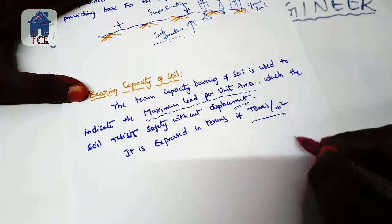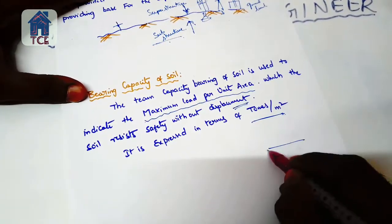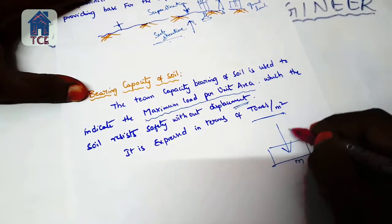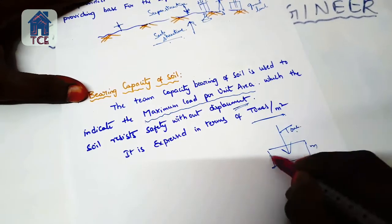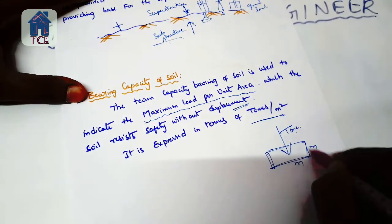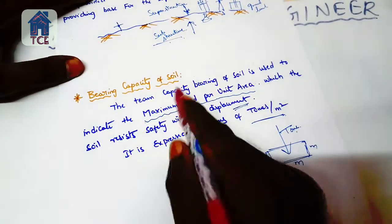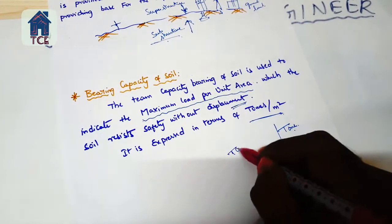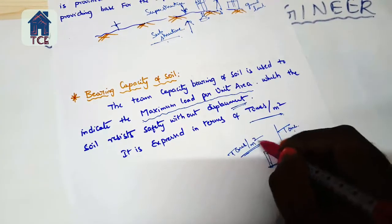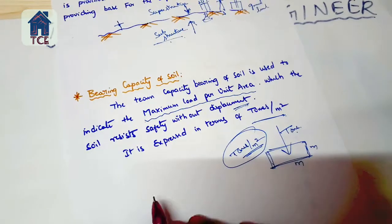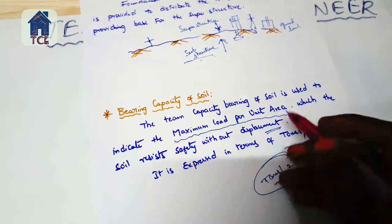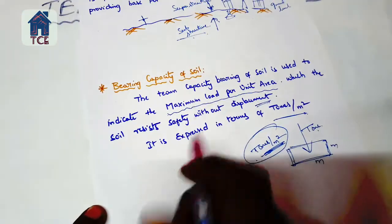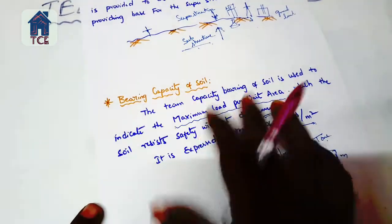The bearing capacity is measured as maximum load per unit area. The units are tons per meter square. This is the bearing capacity of soil.